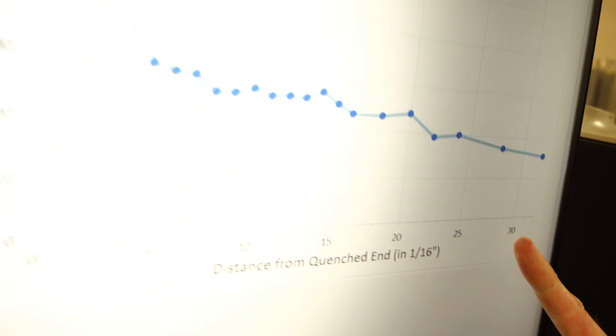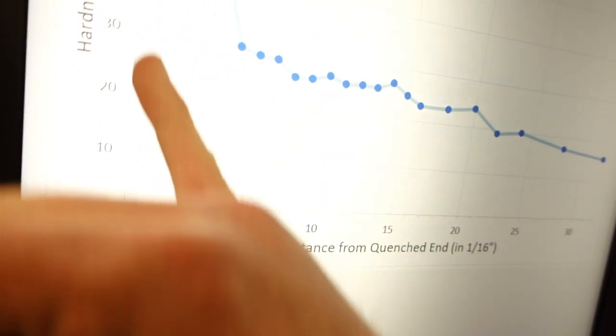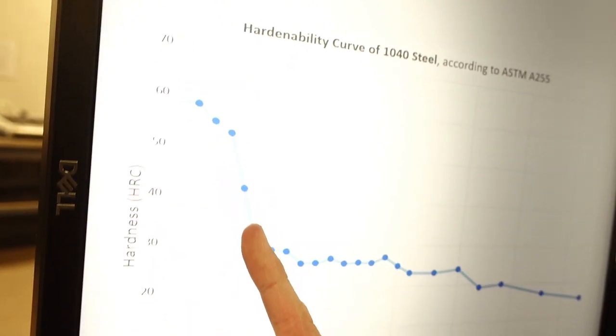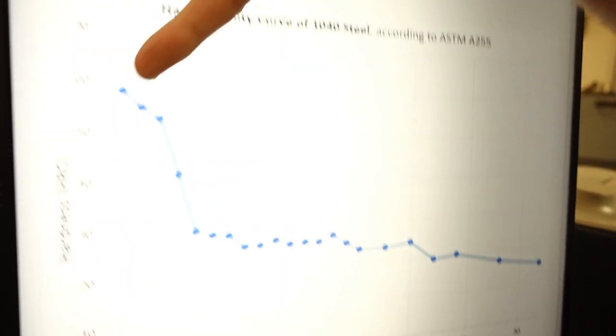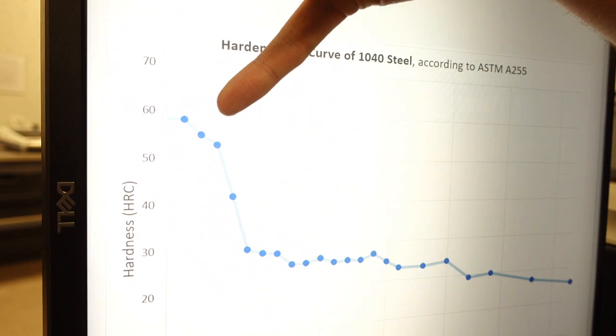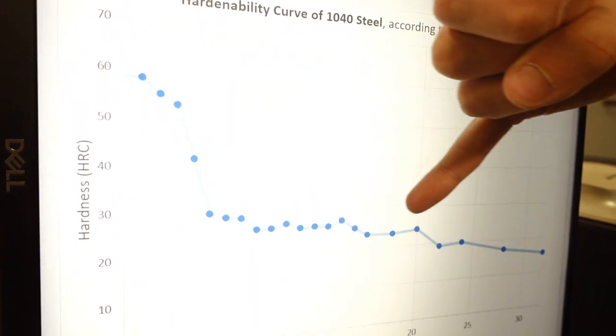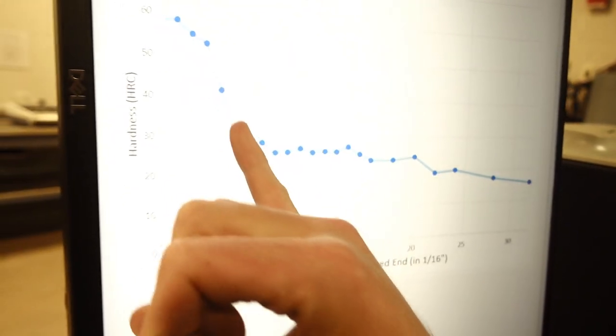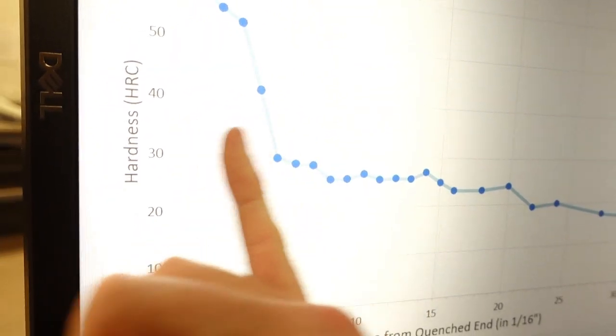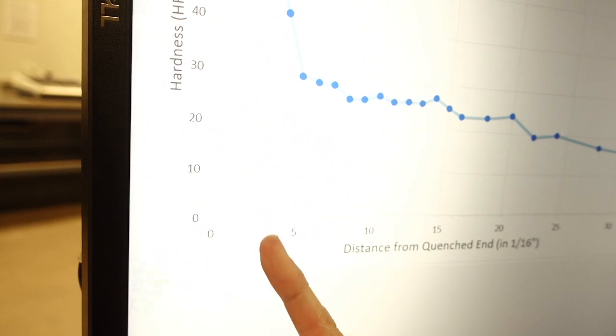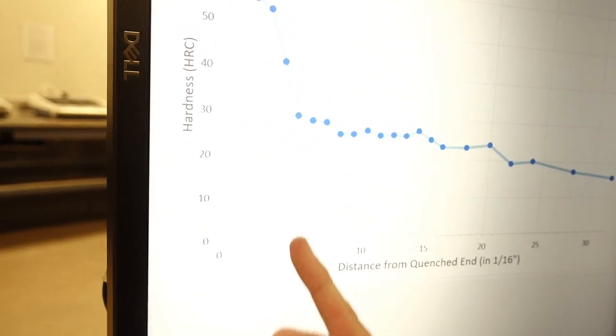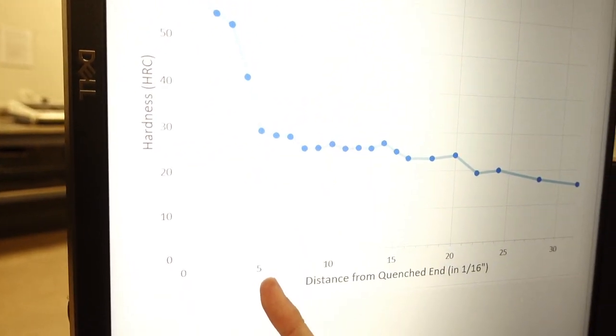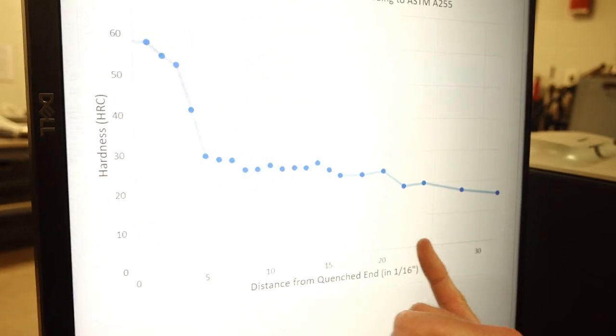So we took our 22 indents total, we graphed them into what we call a hardenability curve. So on our x-axis here, we've got our distance from our quenched end in one sixteenth of an inch. The first sixteenth, our first measurement was a very high hardness, stayed high for a while, but then very quickly dropped off. Leading me to believe that these first three indents were mostly martensite. But once we're down here, we probably have no martensite left at all. That tells us that our 1040 steel actually forms martensite only at quite high cooling rates. After around five sixteenths of an inch, we're pretty much 100% ferrite already. So I would say that 1040 steel is not very hardenable.